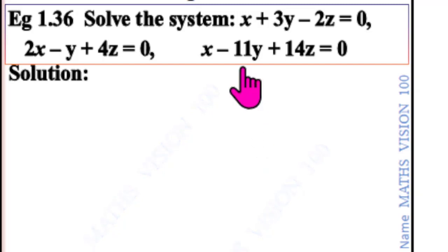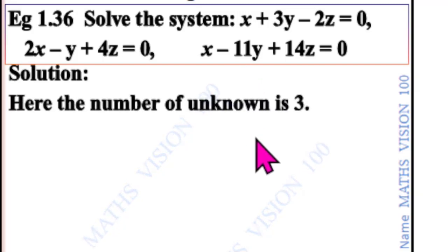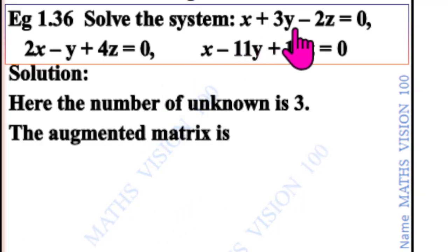Solution: Here the number of unknowns is 3. The augmented matrix [A|B] is...